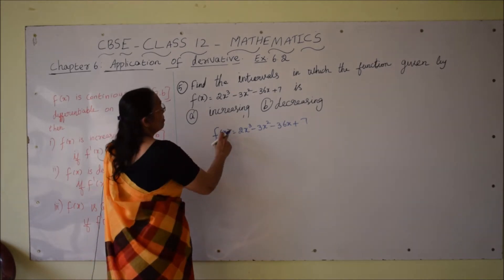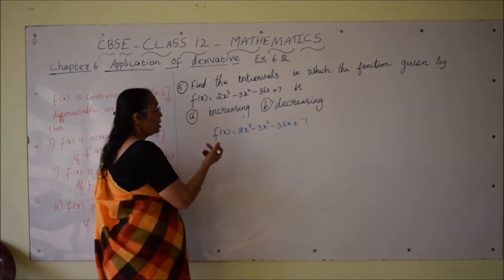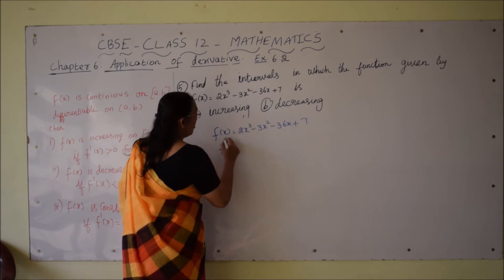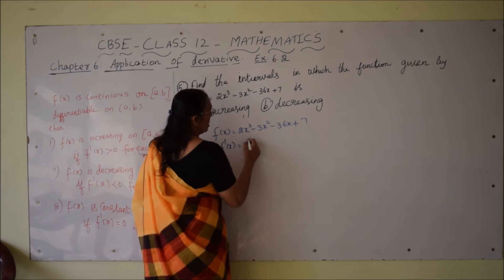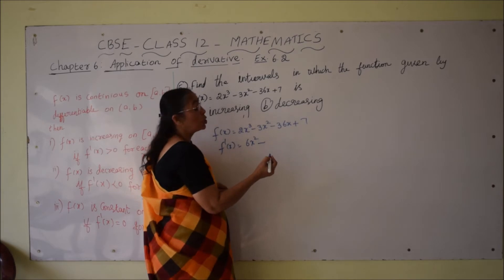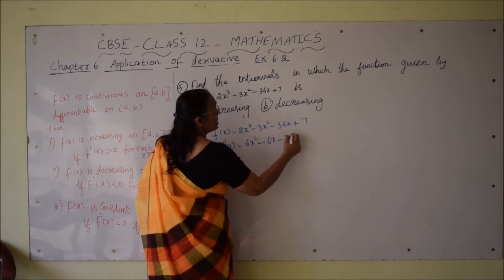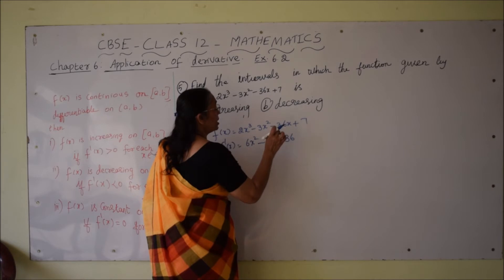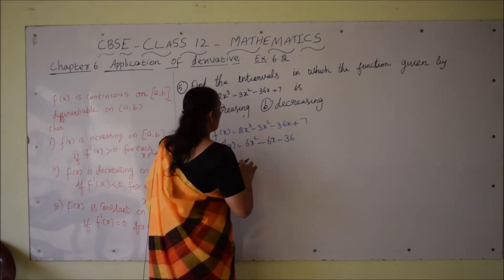We have to find the intervals where this given function is increasing and decreasing. First, let us do the differentiation. f'(x) is: 2 times the differentiation of x³ is 3x², so it is 6x² minus 3 times the differentiation of x² is 2x, giving minus 6x, minus 36 times the differentiation of x is 1, so minus 36, and the differentiation of the constant 7 is 0.